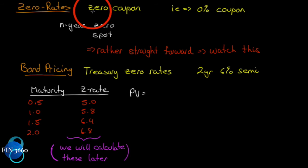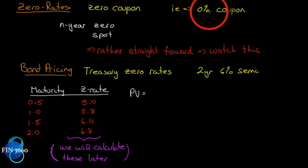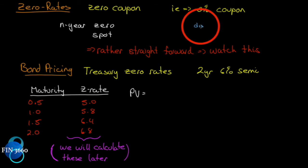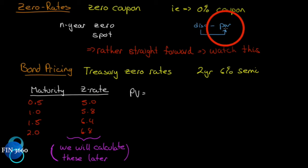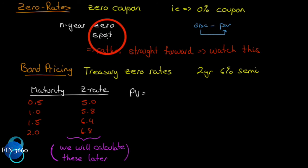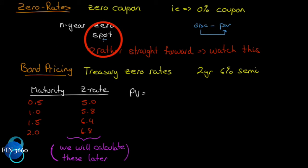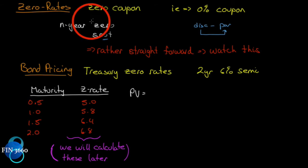So what do we mean by zero rates? A zero coupon bond means the coupon is zero percent — it doesn't pay interest, it's simply sold at a discount and matures at par. The interest rate implied on this is called the zero rate or spot rate. So a five-year zero is the same as the five-year spot rate.